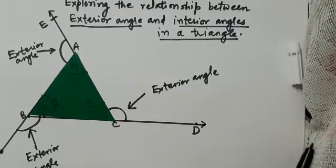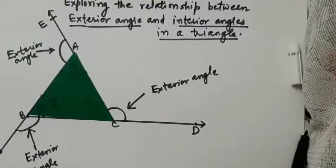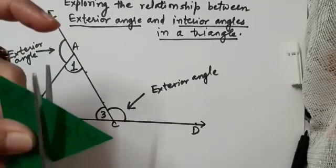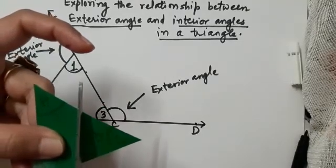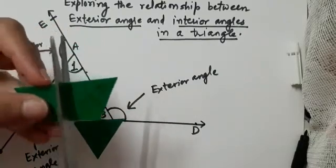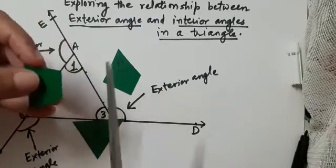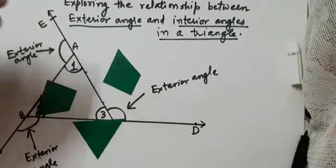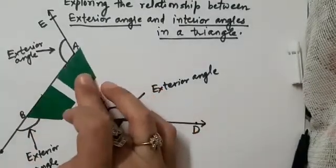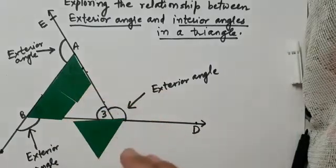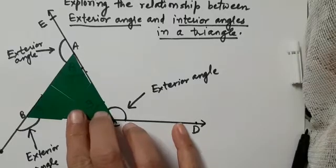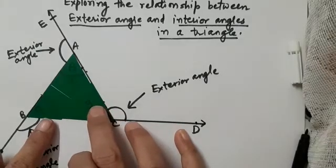With the help of a pair of scissors, I am going to cut this replica into pieces — one piece containing angle 1, one containing angle 2, and one containing angle 3.